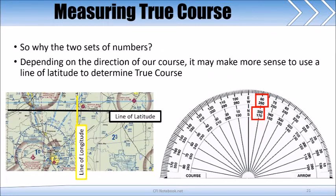So why are there two sets of numbers on the compass rows? Depending on the direction of your course, you may not be able to measure the route against the line of longitude. Imagine if your route was entirely north and south and it did not intersect a line of longitude. We would use a line of latitude in that case, which we have depicted here on the left, and we would reference the lower set of numbers. We would still need to make note of which cardinal direction we are intending to travel so that we choose the correct number.